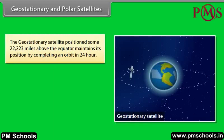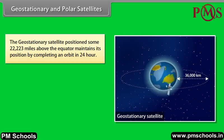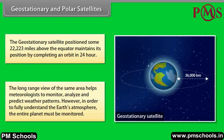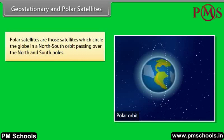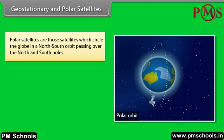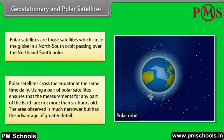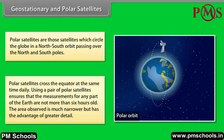The geostationary satellite, positioned some 22,223 miles above the equator, maintains its position by completing an orbit in 24 hours. The long-range view of the same area helps meteorologists to monitor, analyze, and predict weather patterns. In order to fully understand the earth's atmosphere, the entire planet must be monitored. Polar satellites are those which circle the globe in a north-south orbit passing over the north and south poles. They cross the equator at the same time daily. Using a pair of polar satellites ensures that measurements for any part of the earth are not more than 6 hours old. The area observed is narrower but has the advantage of greater detail.